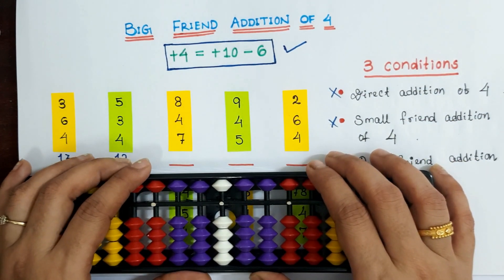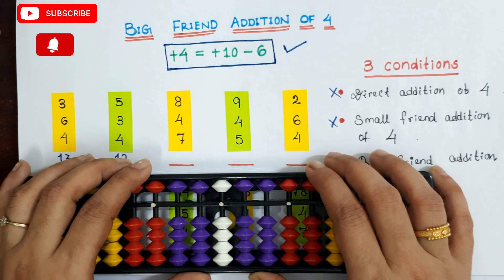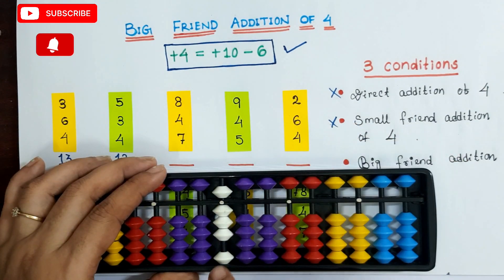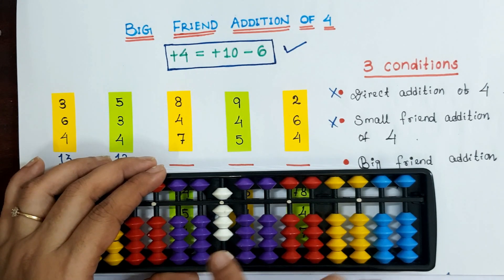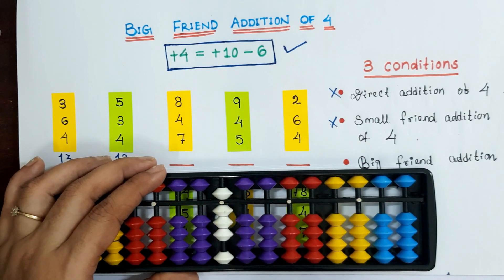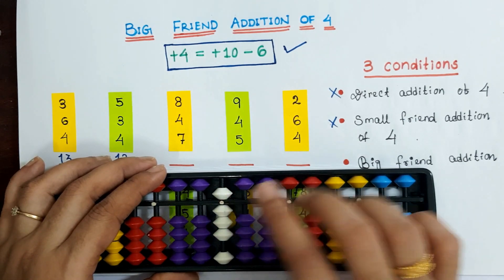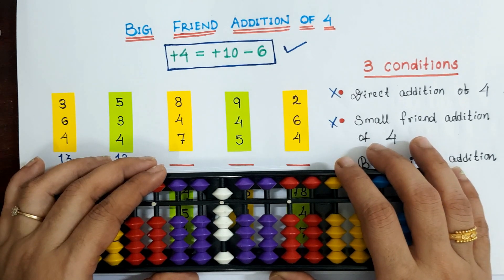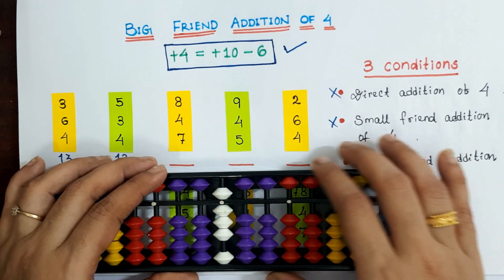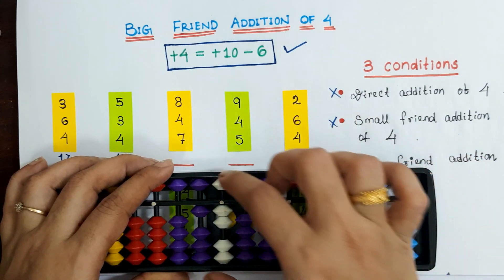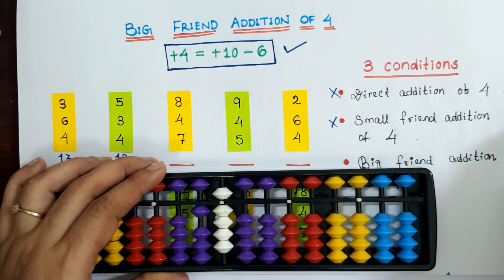Next question: 8 plus 4 plus 7. For 8 plus 4, we don't have 4 more bits to add at the one slot. Also, we are not able to apply the small friend addition of 4 because we have already used the bead of 5. So here we have to take the help of big friend addition of 4, which is plus 10 minus 6, then plus 7. Answer is 19.